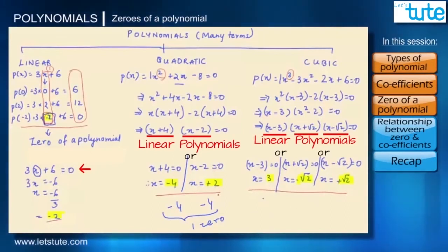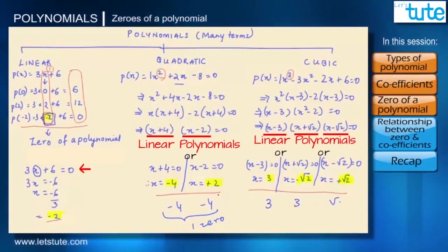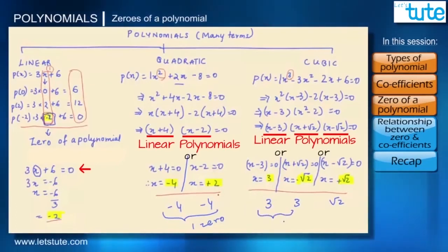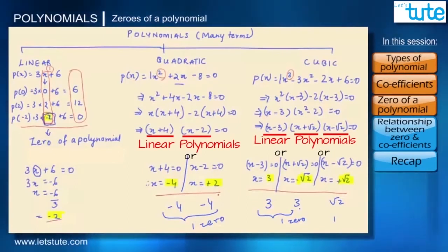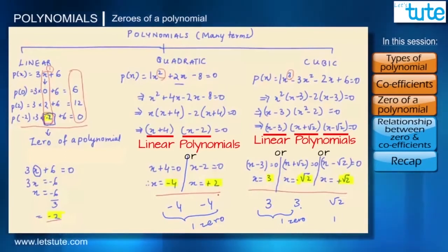Similarly, even for cubic — suppose the zeros were 3, 3, and √2: the two 3s would be considered only one zero and √2 would be another, giving only two zeros for the cubic polynomial. So there is a possibility of fewer than three zeros for a cubic polynomial, but not more than three zeros.